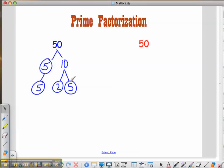Now, to check yourself, if you multiply across, 5 times 10 gives you 50. 5 times 2 times 5 gives you 50. Each row should equal the original value.